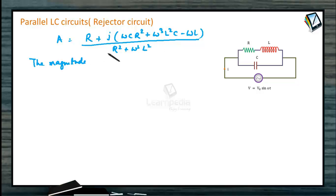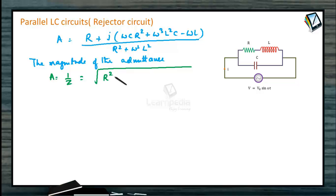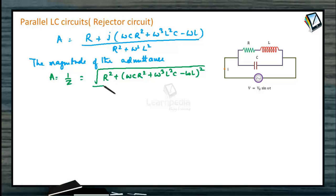Taking LCM, admittance A will be equal to R divided by (R squared plus omega squared L squared), plus j times [omega·C minus omega·L divided by (R squared plus omega squared L squared)]. This will be the total admittance expression.